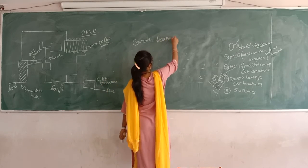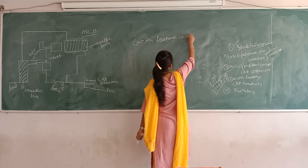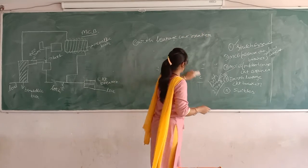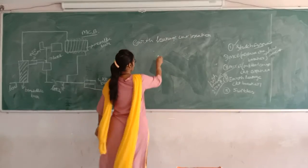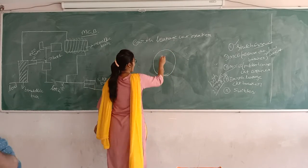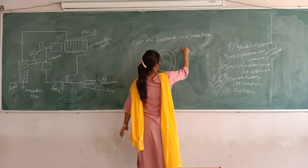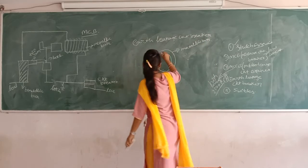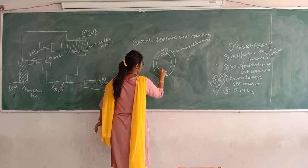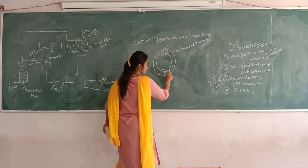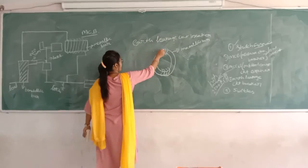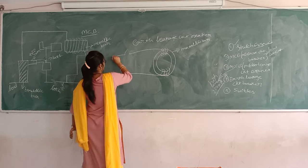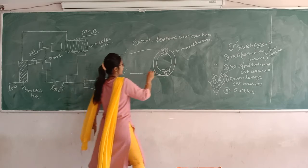Next we will see the Earth Leakage Circuit Breaker and its working principle. We are drawing the metallic part again. To this metallic part, the coil is wound. This is a single phase supply, and this is the load. A two-arc strip coil with a ring is connected.